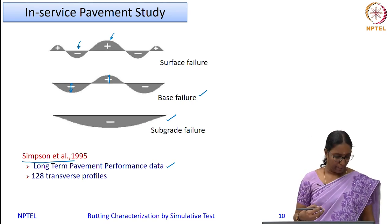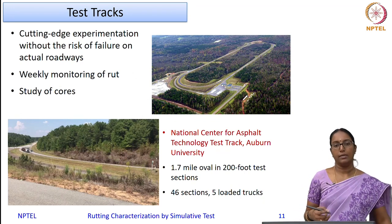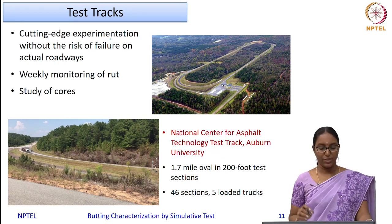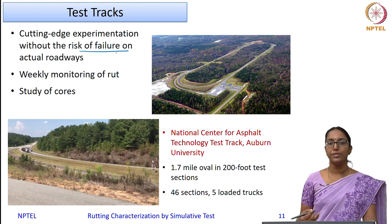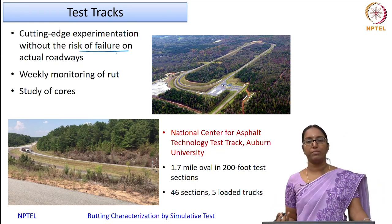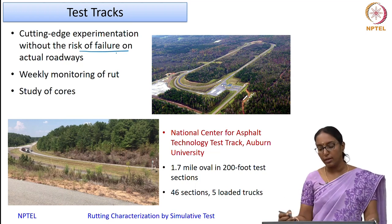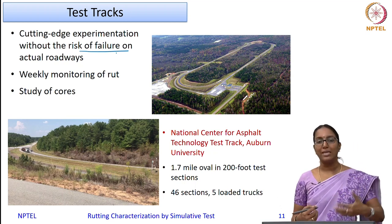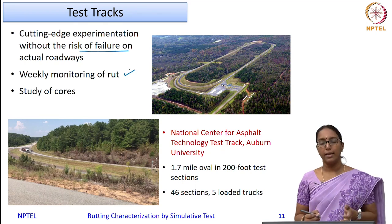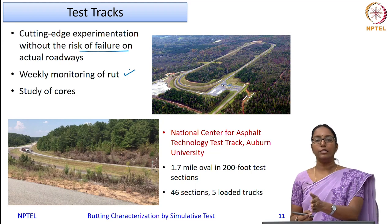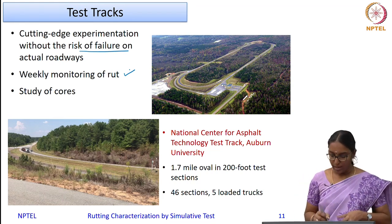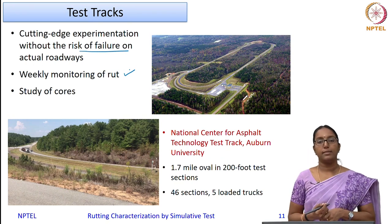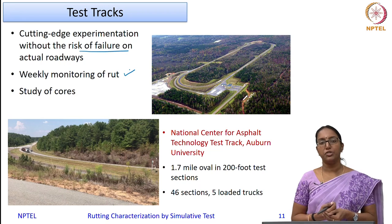One example of a test track is the NCAT test track — the National Center for Asphalt Technology by Auburn University. This is essentially a 1.7-mile oval-shaped test track with 200-foot test sections for each type of material. There are 46 sections, and 5 loaded trucks move on this track. Data regarding deformation, pavement temperature, rutting, and cracking are collected regularly. Such test tracks are prepared and research is conducted by many agencies, transportation divisions, and universities.